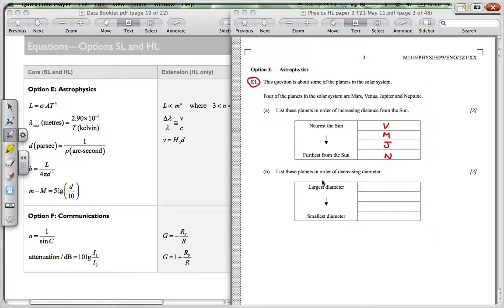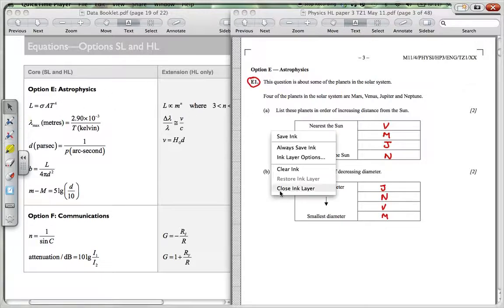And then list these planets in order of decreasing diameter. So it's going from the biggest to the smallest. And I think it would be, I'm not always totally clear of this, but it would definitely be Jupiter, the largest, and then Neptune. And then I think it is Venus and then Mars. But it could be incorrect on that. I don't keep those myself in my brain.